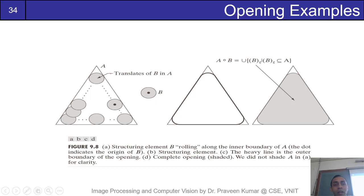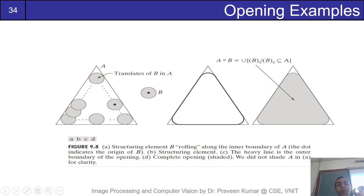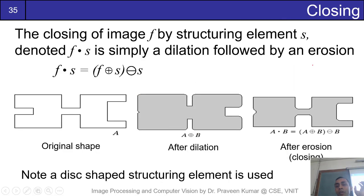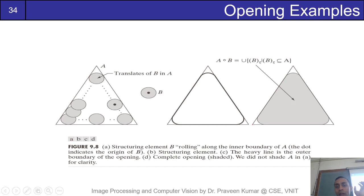Here is a quick intuitive way to understand the result for some structuring elements: you just roll the structuring element on the inner boundary — inside the outer boundary — and wherever it can reach the farthest, those locations form the output of the opening operation. For example, where the disk cannot go further inside, the boundary of the result stops there, giving a smoothed result around the corners.